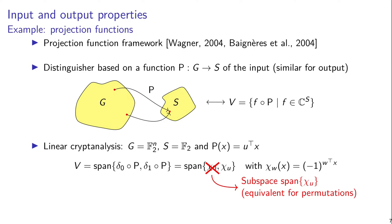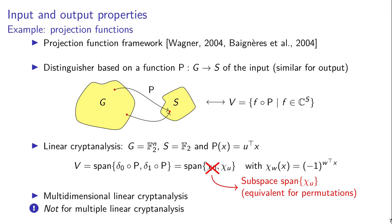One note about this is that usually in linear cryptanalysis we do not consider chi_0, because for permutations this is always preserved as it corresponds to the uniform distribution and so it doesn't provide additional information. Other examples include multidimensional linear cryptanalysis, where you would have a projection function from F2^n to F2^m, where m is usually much smaller than n.